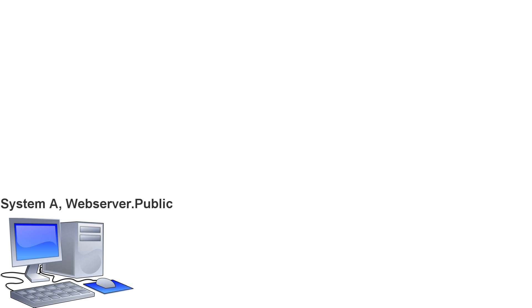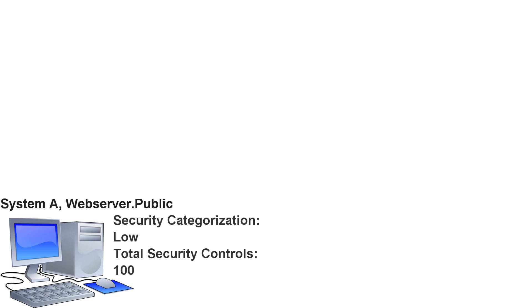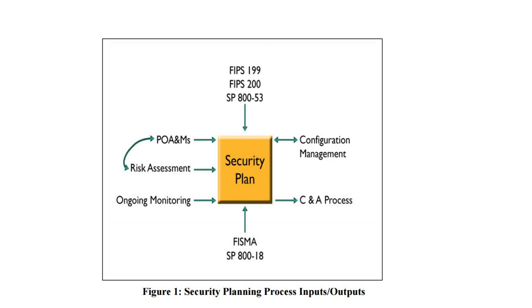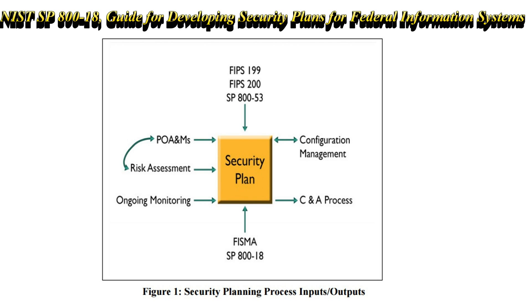Once we've established which controls we have — say, about 100 controls on our web server public system — the next step is to document these controls. We do that in what's called a System Security Plan. This is a very significant piece of the whole process. If you want to know the format, you can go to NIST Special Publication 800-18, and it breaks down all the things that are supposed to go into a System Security Plan.